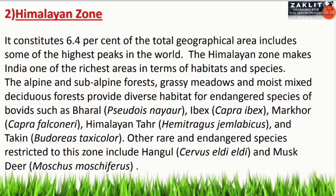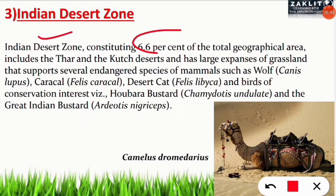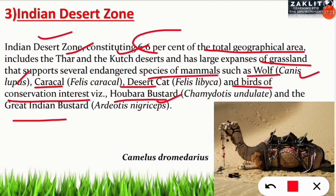The Indian desert zone constitutes 6.6% of India's total geographical area, including the Thar Desert and the Kutch desert. It has large expanses of grassland supporting several endangered mammal species such as wolf (Canis lupus), Caracal, and Desert cat. Important birds of conservation interest include the Houbara Bustard and the Great Indian Bustard. The camel, Camelus dromedarius, is also characteristic of this zone.